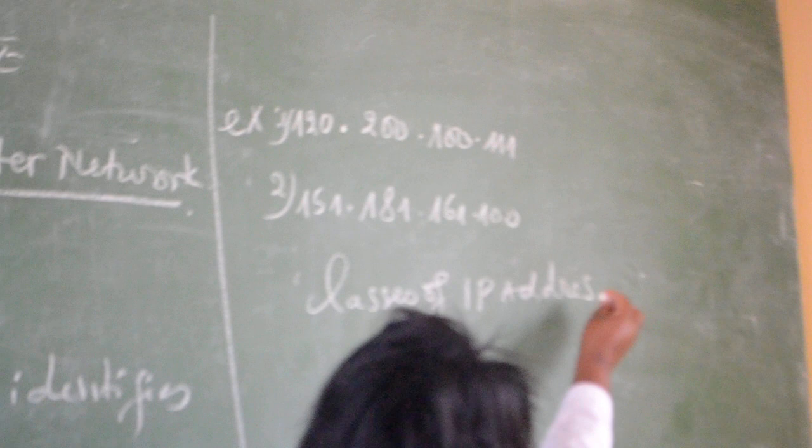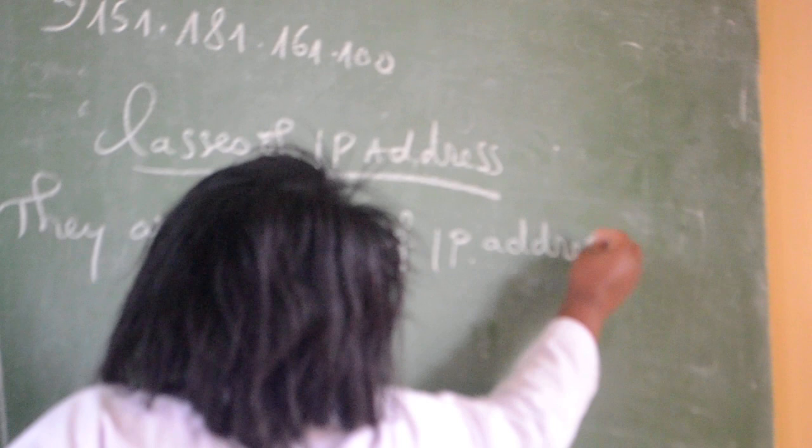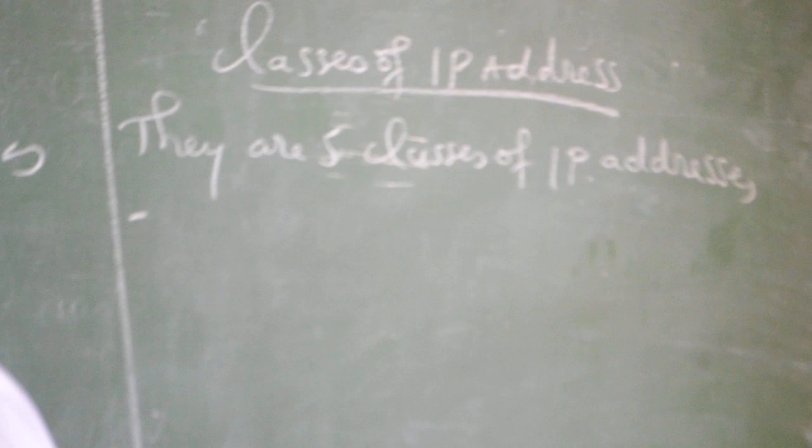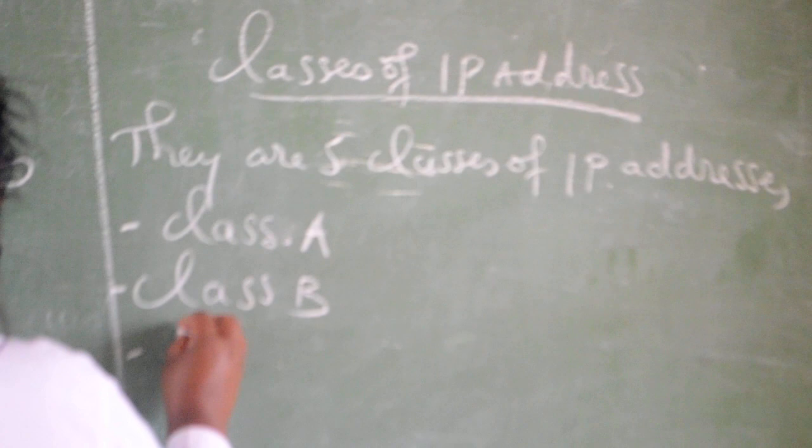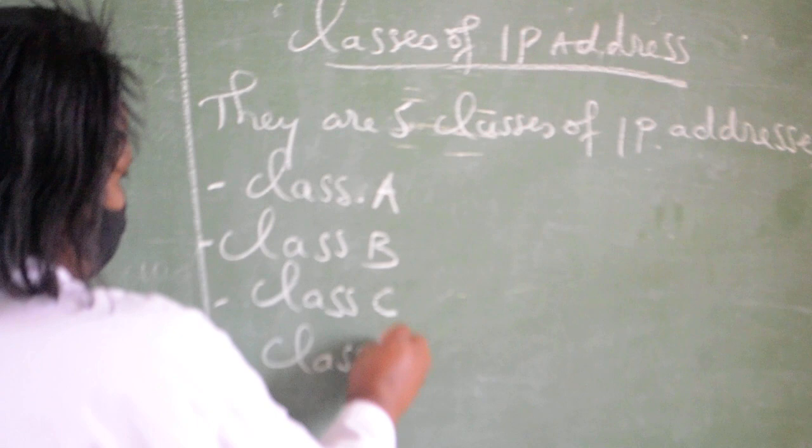After seeing the structure of IP address, now let us see the classes of IP address. The IP address has five different classes. There are five classes of IP address. Those classes are: we have class A, we have class B, we have class C, we have class D, also we have class E.